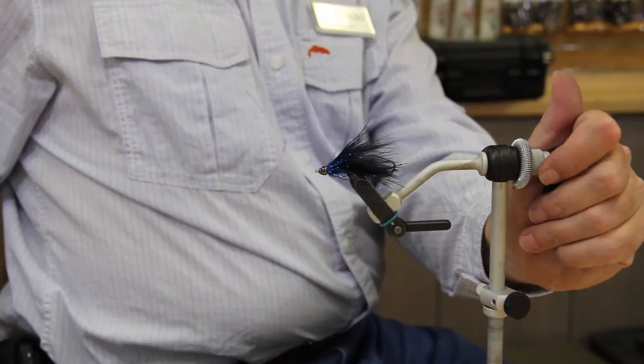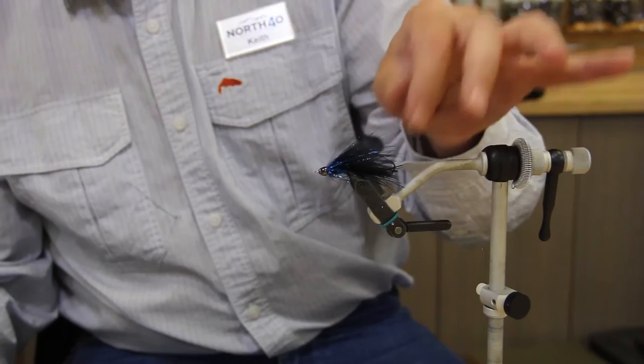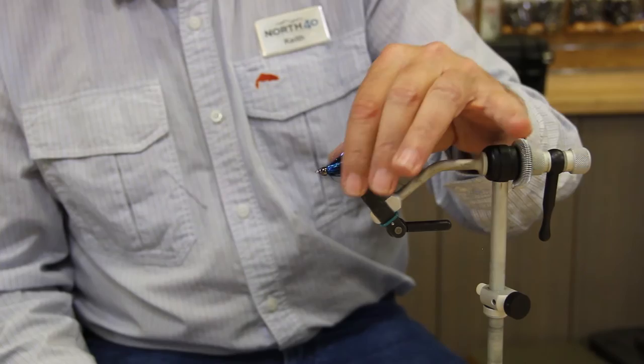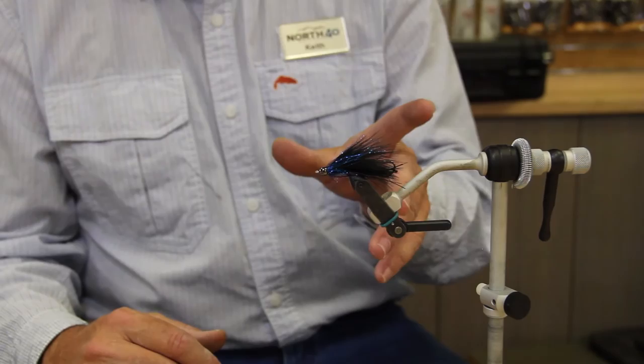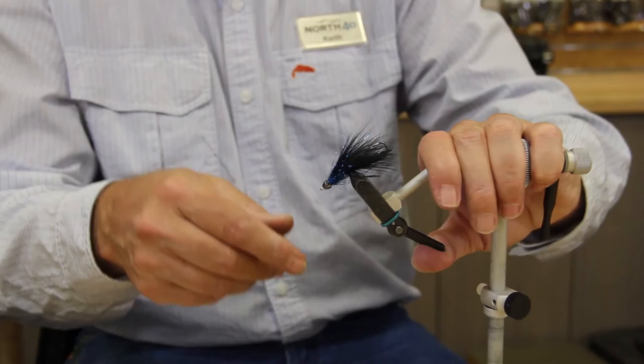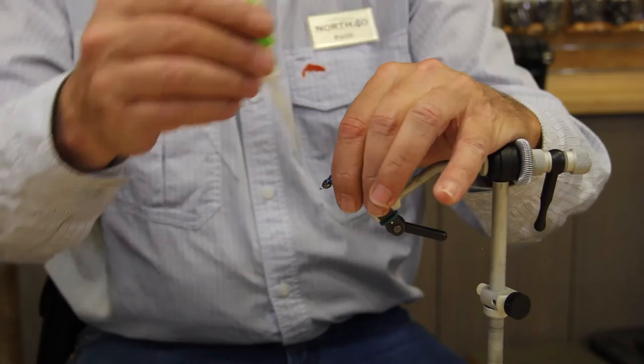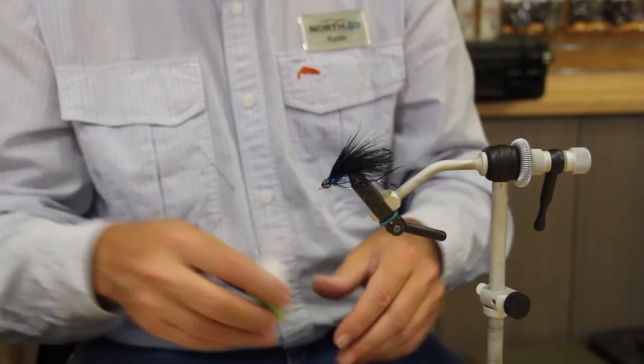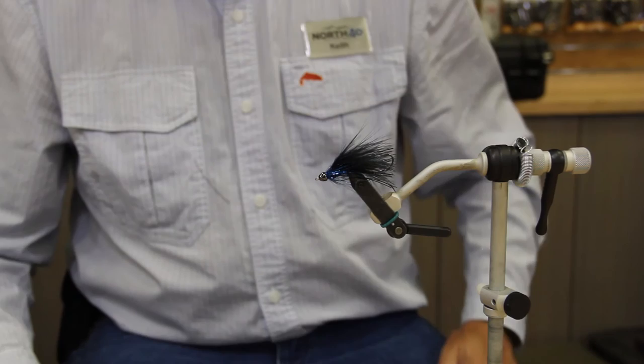When this thing gets wet, it's real low profile, but it's got just enough flash. Especially the first part of the season, it's really good. A little later on, it works just as good. One last thing is I like to put some head cement in there, and then I'll use some zap-a-gap. What I'll do is I'll turn this down so it kind of flows into it. Good luck to you out there.